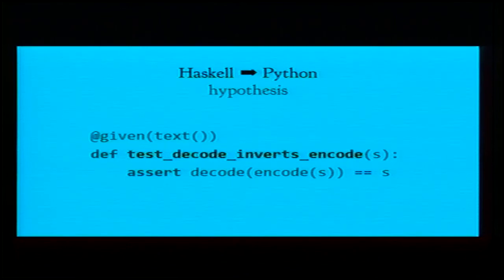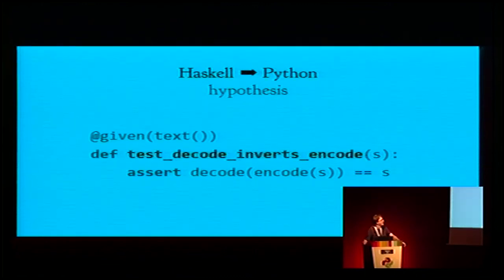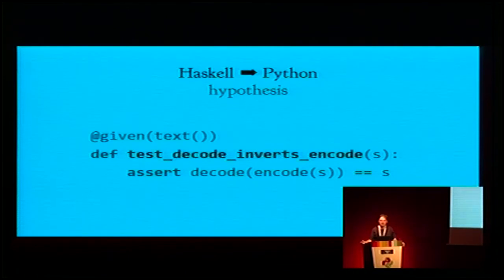Going the other direction, hypothesis is a Python library for property-based testing, inspired by the Haskell library QuickCheck. The main idea: instead of making one example and checking your code works on that example, you declare a property you want to check — for instance, if you have decode and encode functions you expect decoding an encoded value to return the original. Hypothesis will verify this is true for every input it can generate. It has very good generation heuristics and finds every corner case you've forgotten. You can use it right now in Python.